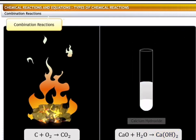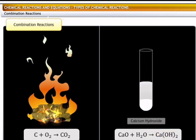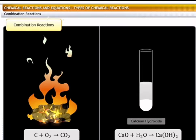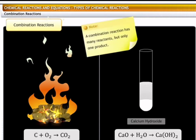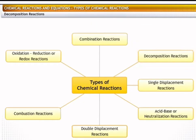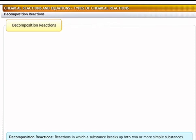In another example, calcium oxide combines with water to form slaked lime or calcium hydroxide. In this reaction, the two compounds, namely calcium oxide and water, combine to form a single product called slaked lime. You must remember that a combination reaction has many reactants but only one product. Combination reactions and decomposition reactions are the opposite of each other.